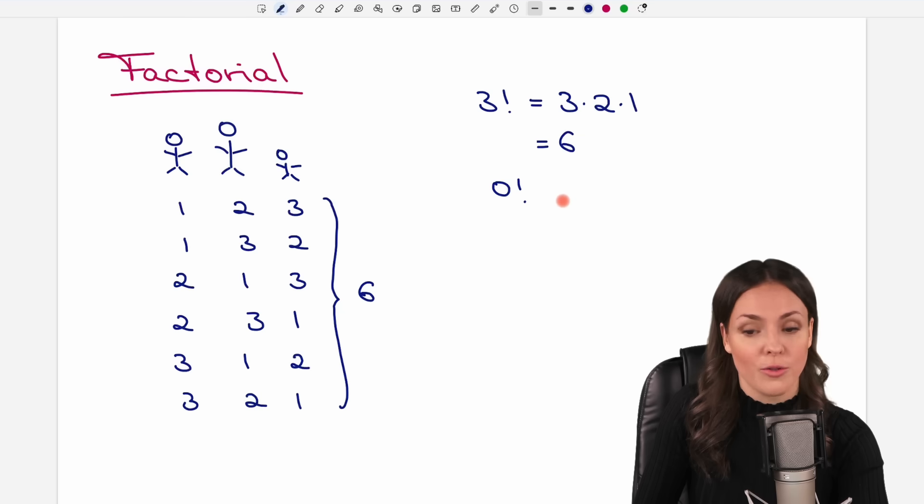zero factorial is not zero, but it is one. So if you think about it, if you have zero people in a row, so no one is there, then you have one possibility to do nothing.